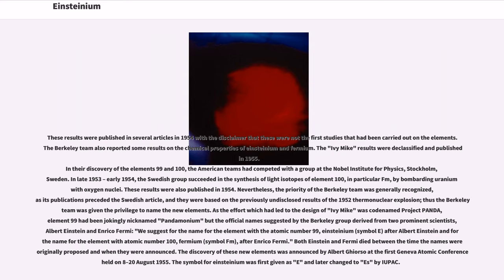Nevertheless, the priority of the Berkeley team was generally recognized, as its publications preceded the Swedish article, and they were based on the previously undisclosed results of a 1952 thermonuclear explosion, thus the Berkeley team was given the privilege to name the new elements. As the effort which had led to the design of Ivy Mike was codenamed Project Panda, element 99 had been jokingly nicknamed Pandemonium but the official name suggested by the Berkeley group derived from two prominent scientists, Albert Einstein and Enrico Fermi.